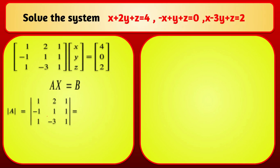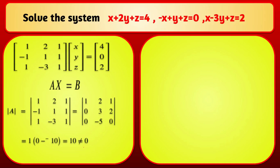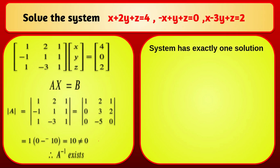To evaluate det(A), apply row operations: R2 → R2 + R1 and R3 → R3 − R1. The resulting determinant evaluates to 10, which is not equal to 0. Therefore A is non-singular, A inverse exists, and the system has exactly one solution.